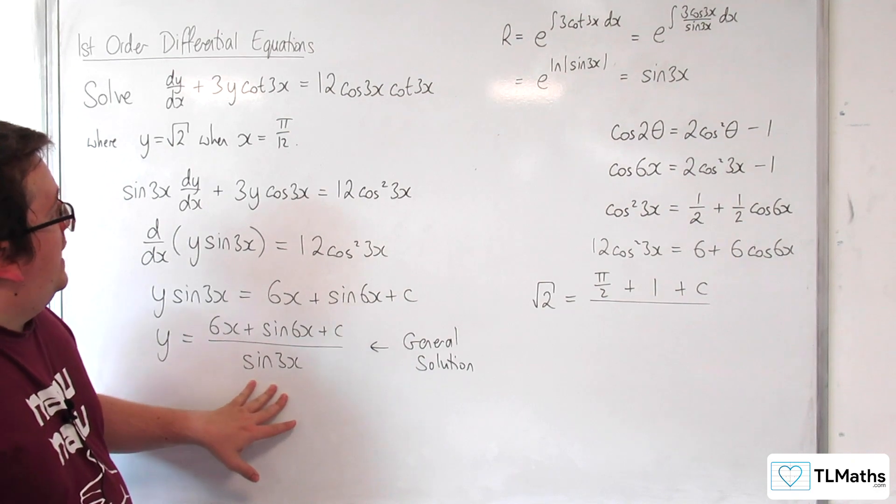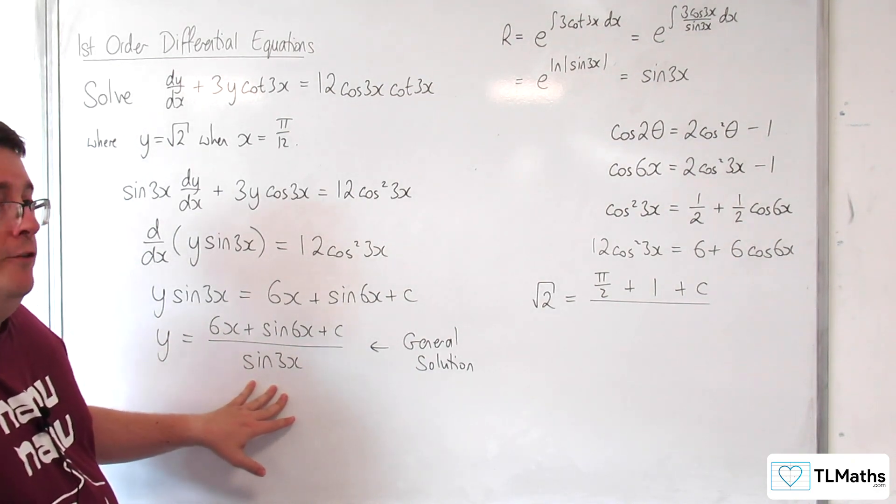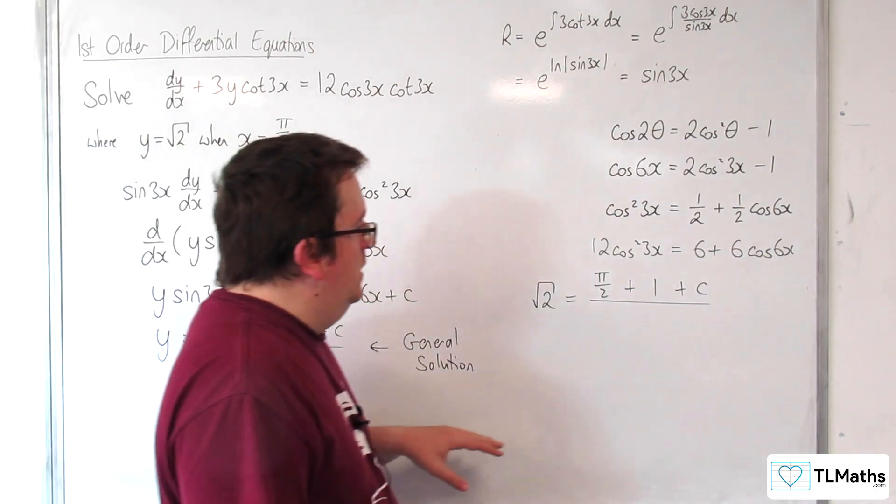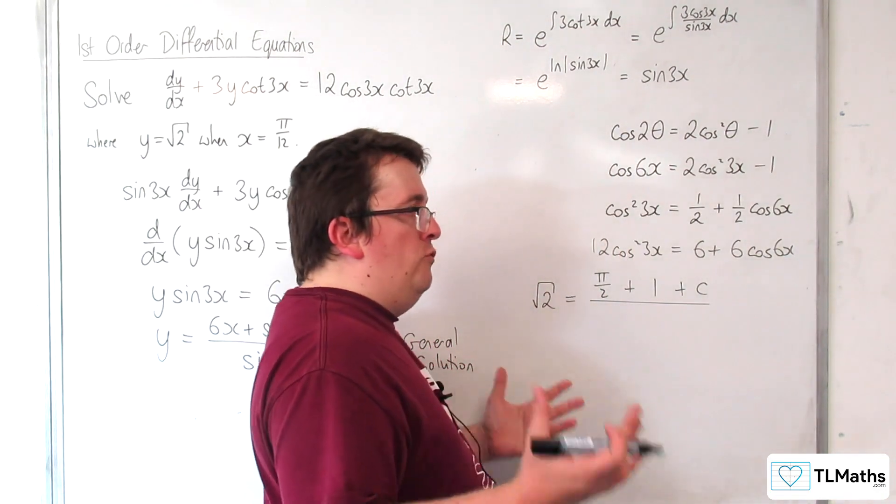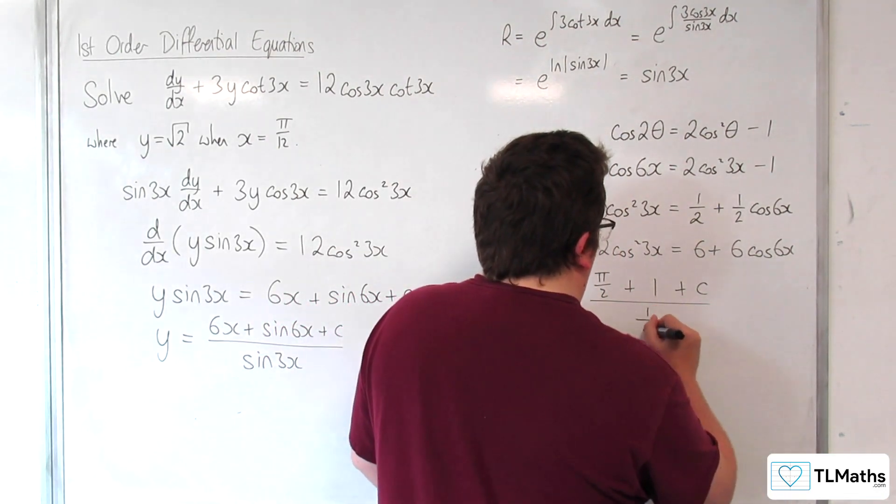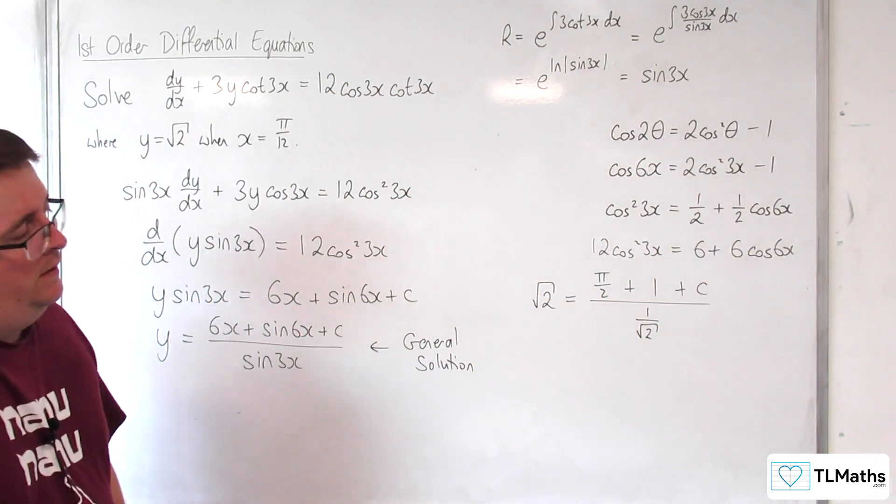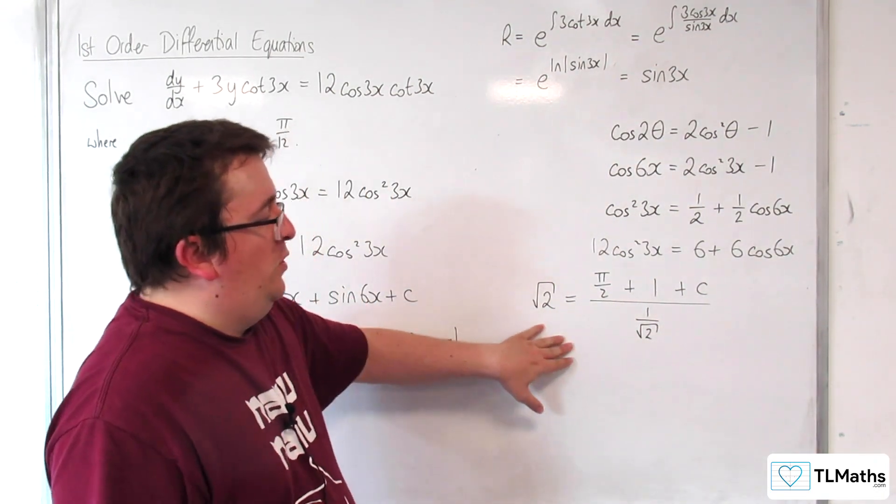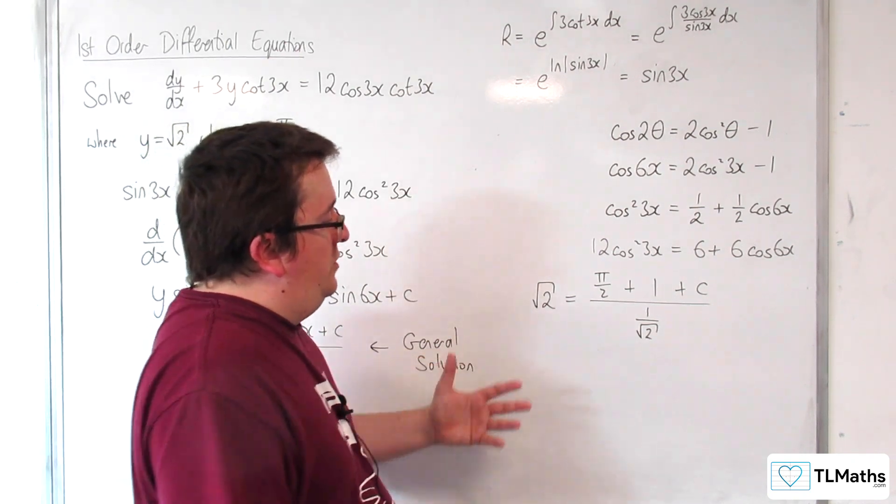Then we've got sine of 3x, so sine of pi over 4, which is 1 over root 2, or root 2 over 2. Let's just go with 1 over root 2. If I multiply up by the 1 over root 2, I get root 2 over root 2, which is just 1.